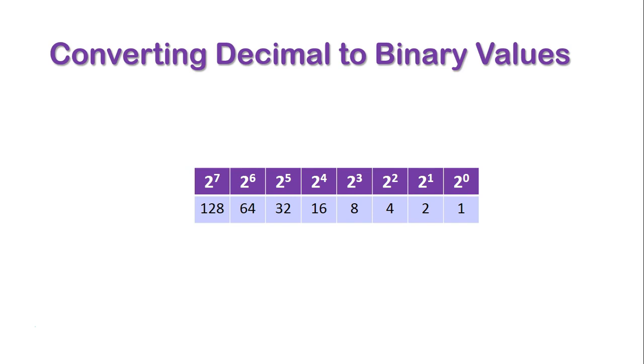When converting an actual decimal number to a binary number, we're actually starting on the left-hand side of this table at the 2 to the power of 7 or 128 in the case of 8-bit binary. So let's set this up in order to do some calculations.